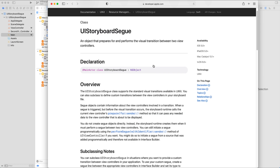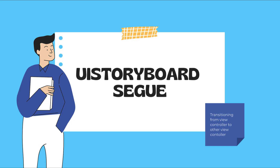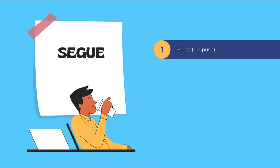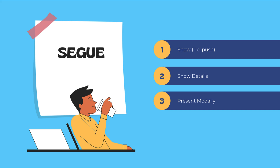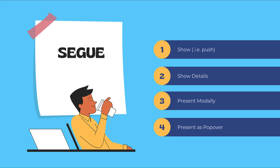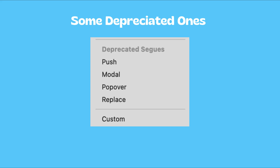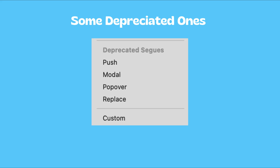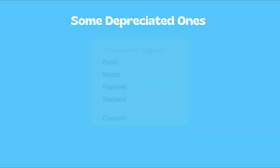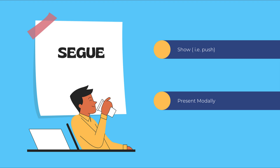Before we start creating segues, let's talk about segue types. We have a bunch of segue types available based on our needs. Some of them are Show, Show Details, Present Modally, and Present as Popover. There are also deprecated ones such as Push, Modal, Popover, Replace, and Custom. I will leave a link in the description for you to read thoroughly. We will discuss the most commonly used segue types: Show and Present Modally.